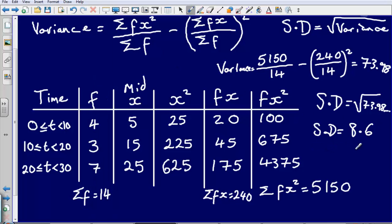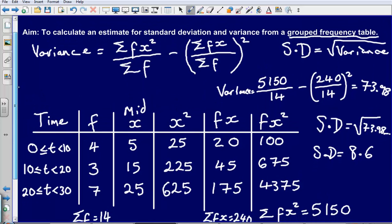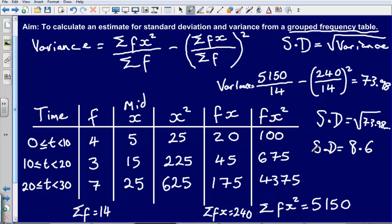So my two answers here, finding the standard deviation and variance from this information here. My variance was 73.98, and my standard deviation 8.6.